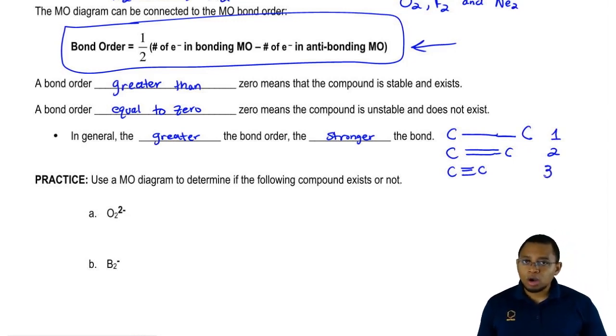Triple bonds are stronger than double bonds, stronger than single bonds because the more bonds you put on top, the more you layer, the stronger the bond.